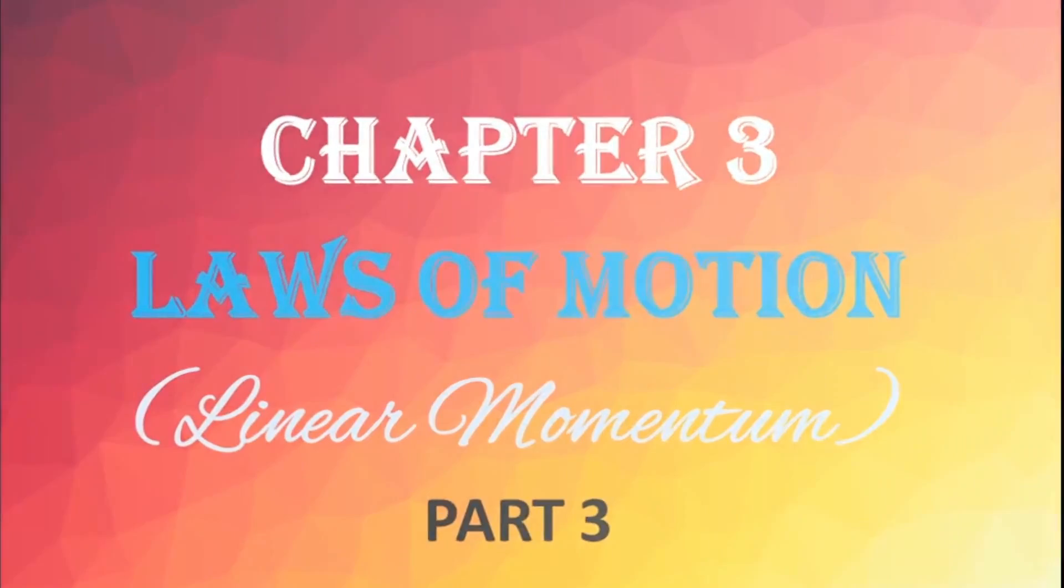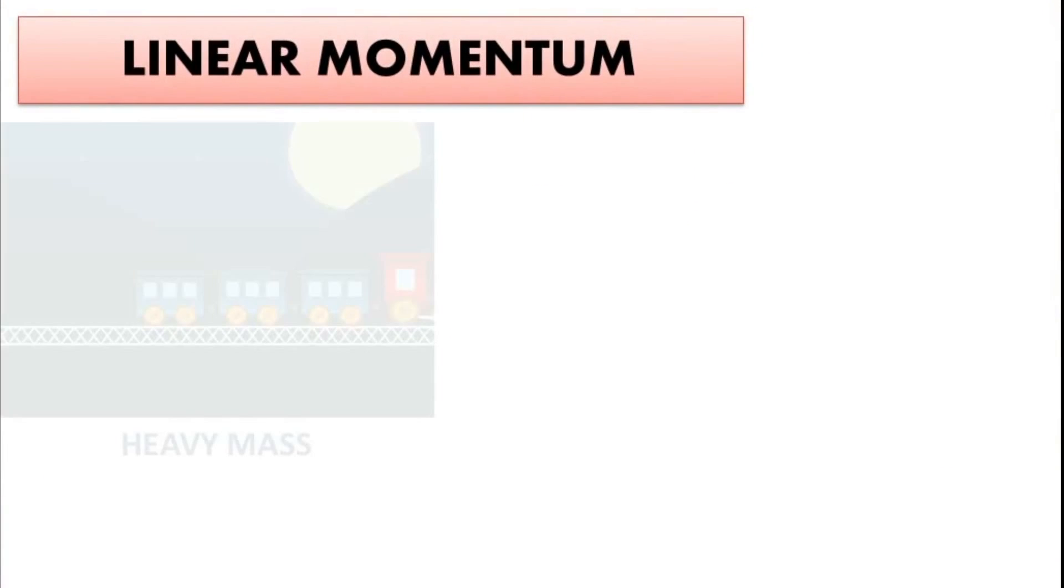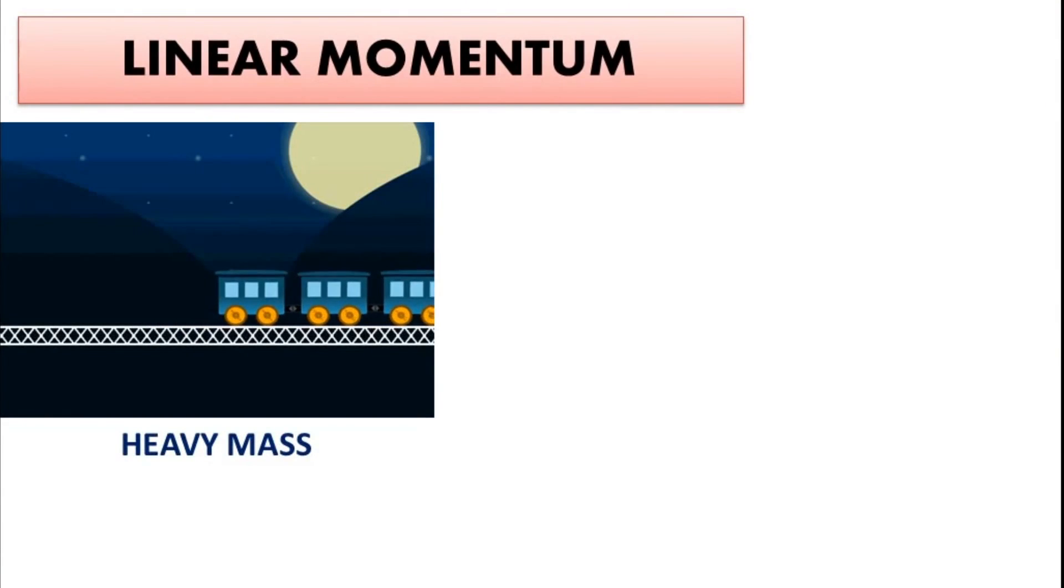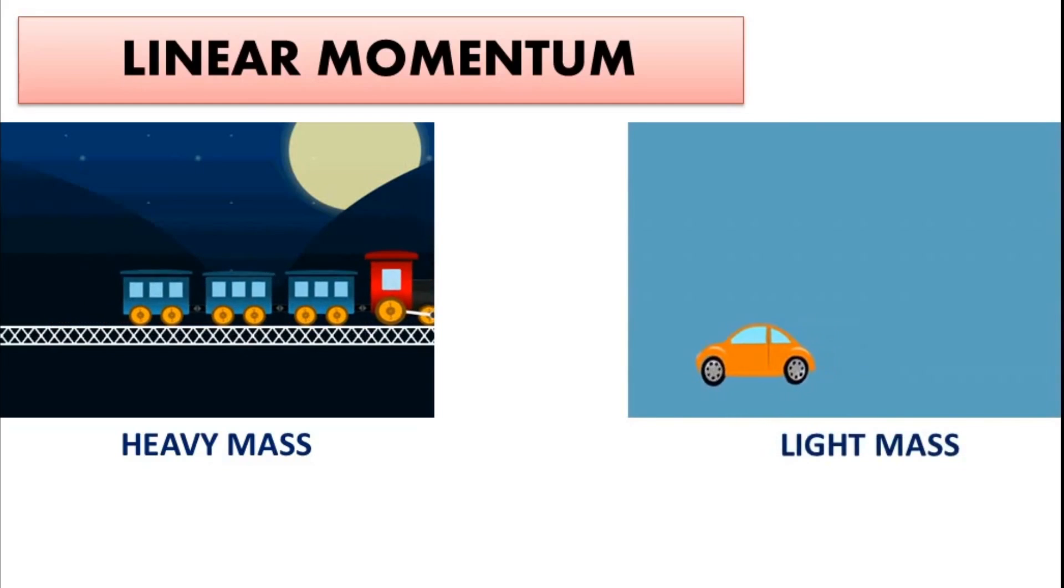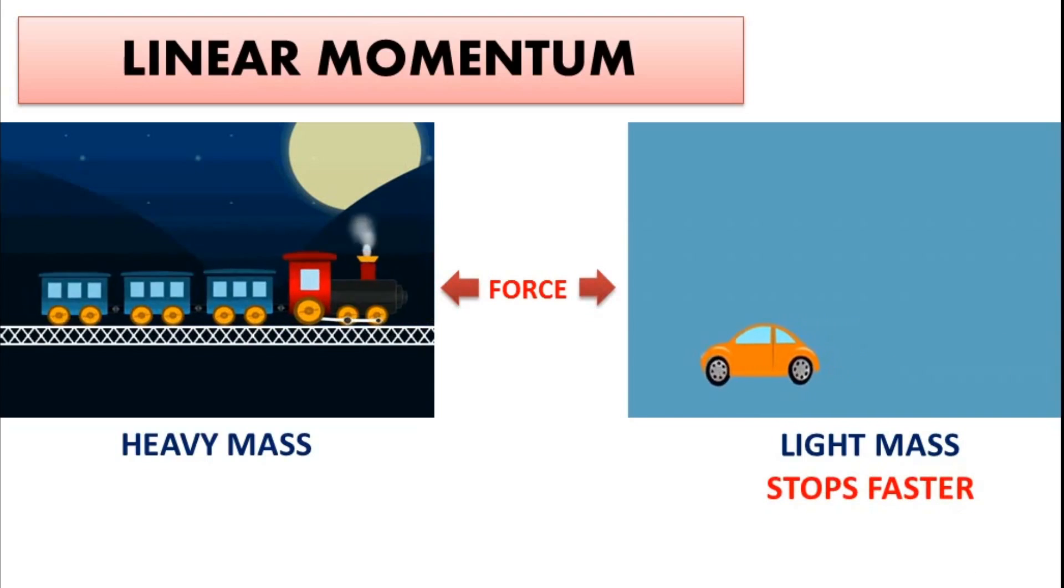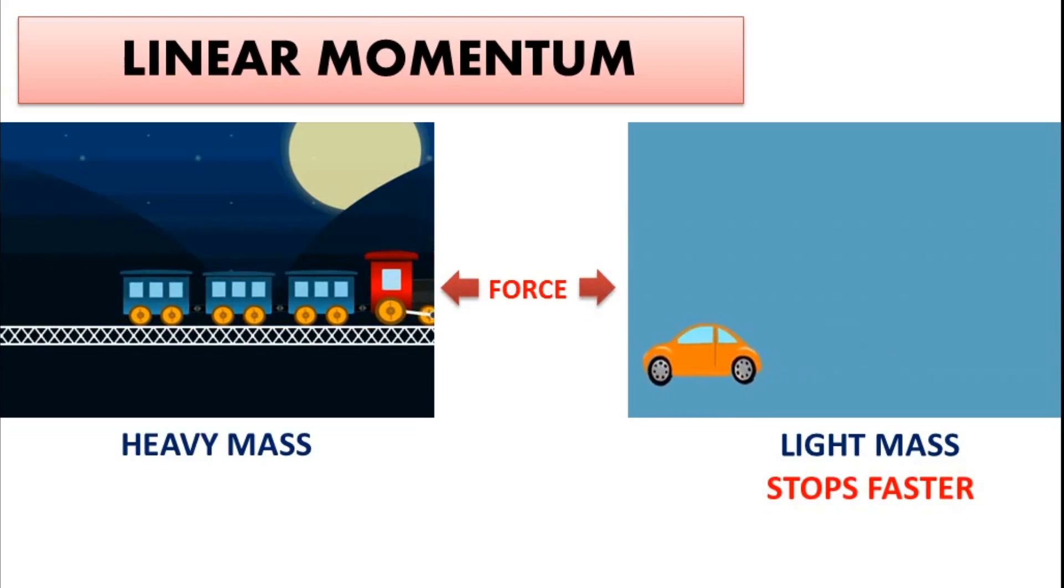First let us study about linear momentum. We know that if a train that is a heavy body and a car that is a light body is moving with the same speed and we apply equal force on both to stop it, the lighter body or car stops faster than the heavier body, that is train.